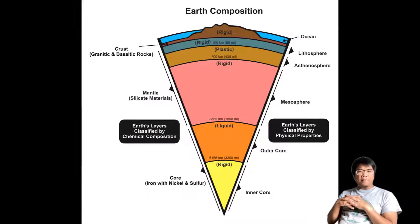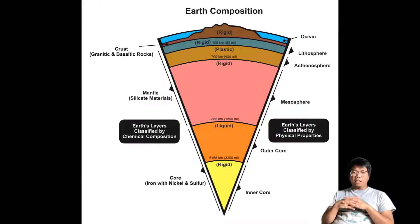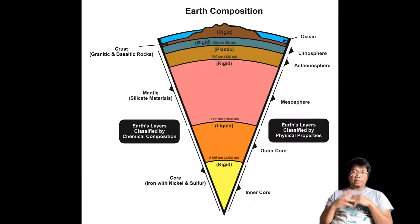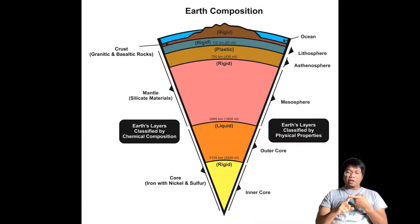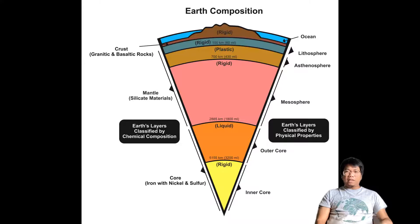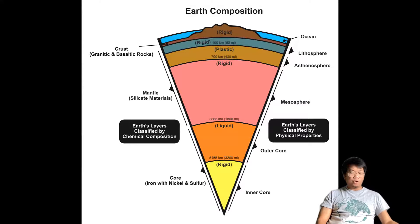That's all I would like to cover in this video. Remember that we can divide Earth's layers based on two criteria: chemical composition and physical properties. If you have questions, let me know — you can also post those questions in our Q&A forum in this course. I'll see you again in the next video. Bye bye.